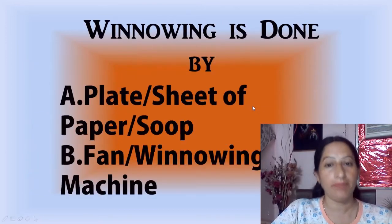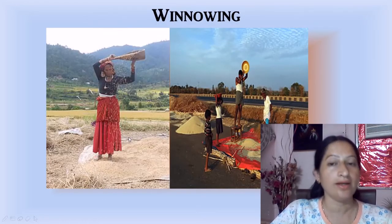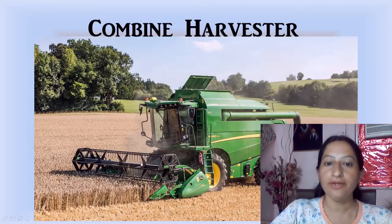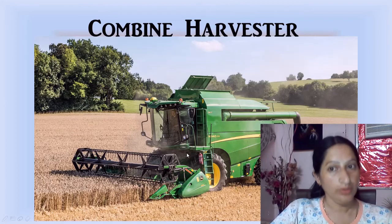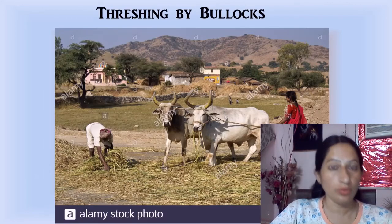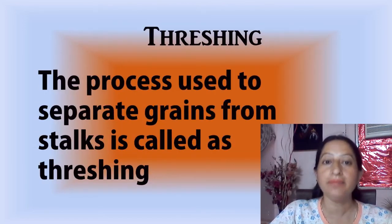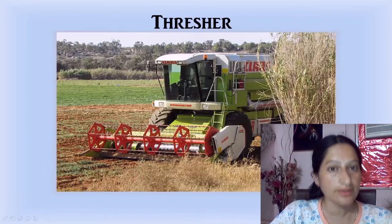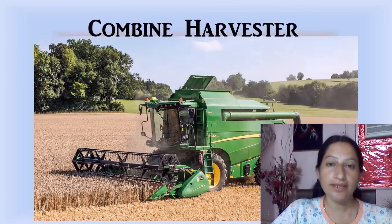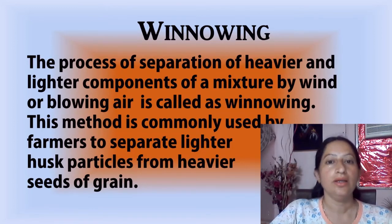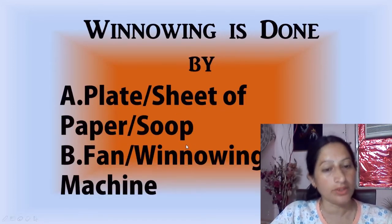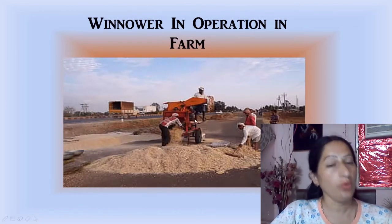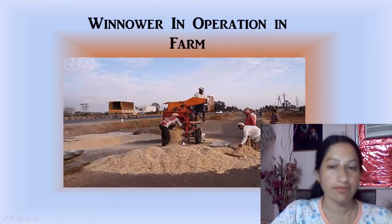In threshing, no wind is used in any of the tools or methods. The tools for threshing include bullocks, a thresher, or a combined harvester. For winnowing, the tools used are a plate, a sheet of paper, or a soup, and a fan or a winnowing machine. The differences between threshing and winnowing should now be clear.